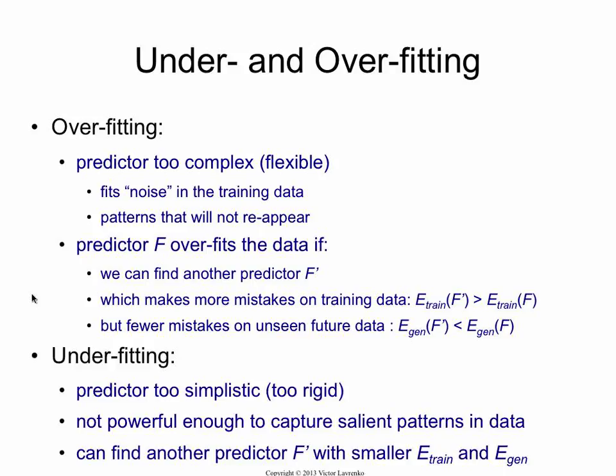On the opposite side of overfitting, there is underfitting. Underfitting is a problem that occurs when you pick a classifier that is too simple — not complex enough, not flexible enough to capture the useful patterns in the data; it's a little too rigid. Formally, f is underfitting if you can find another f prime which has better training error and better generalization error — higher accuracy on your training data and also higher accuracy on future data.